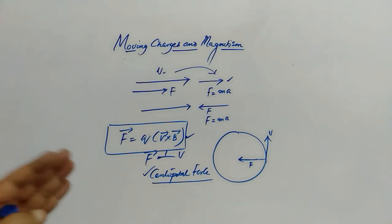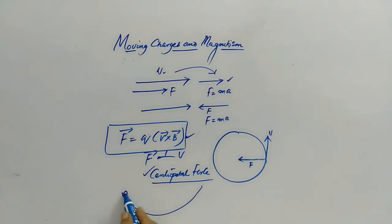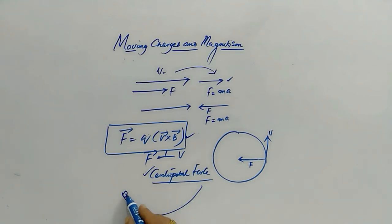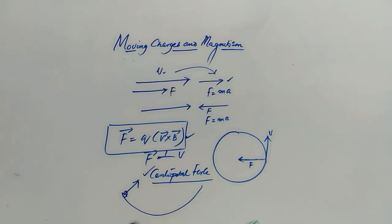Similarly, when you rotate a stone tied to a thread, the tension provides the centripetal force. On a gravity rail, the normal reaction provides the centripetal force. So centripetal force can be provided by external agencies such as friction, gravitational force, Lorentz force, electrostatic force, tension in a string, and normal reaction.